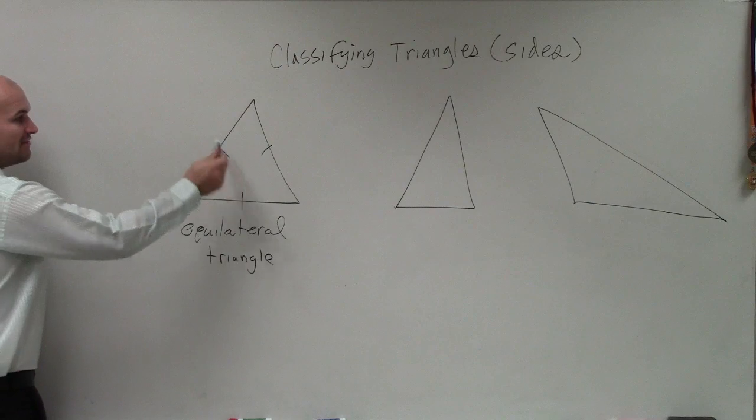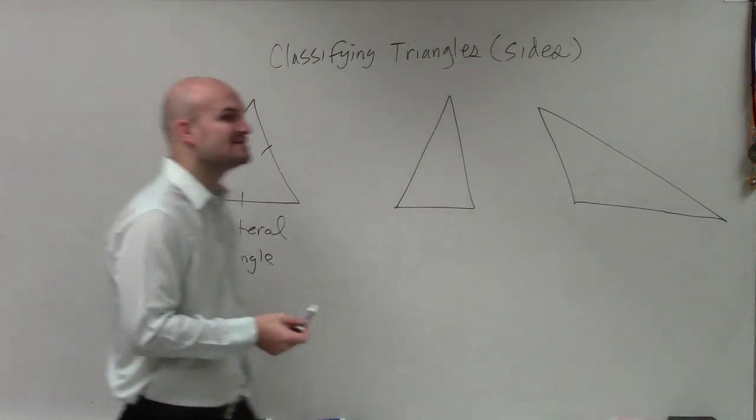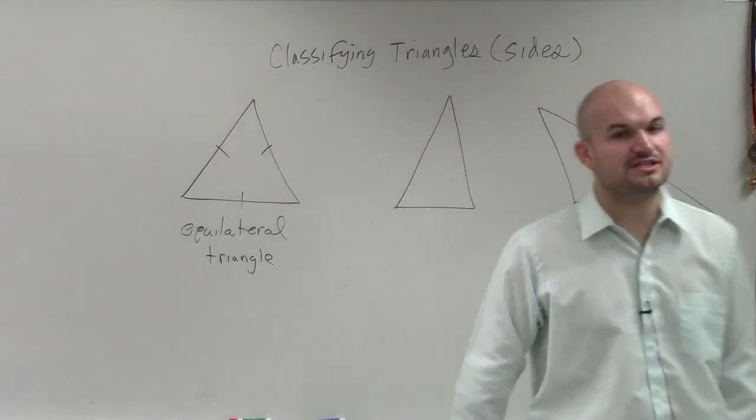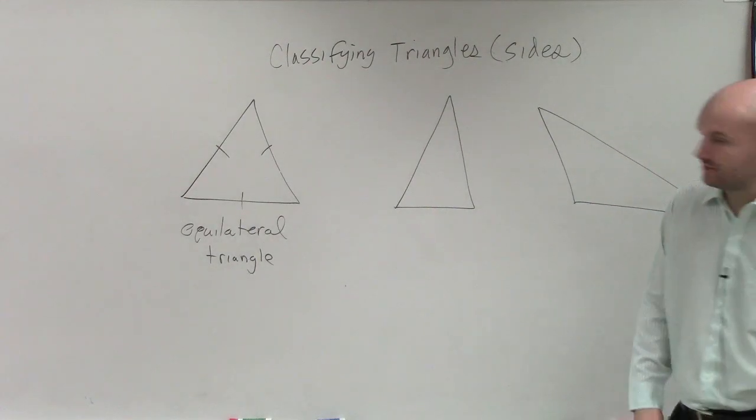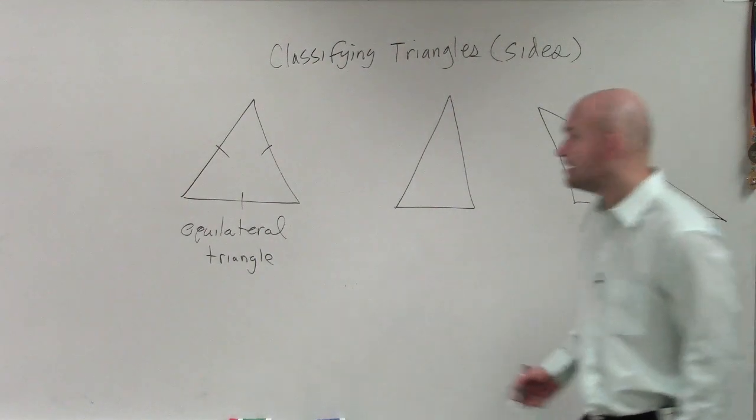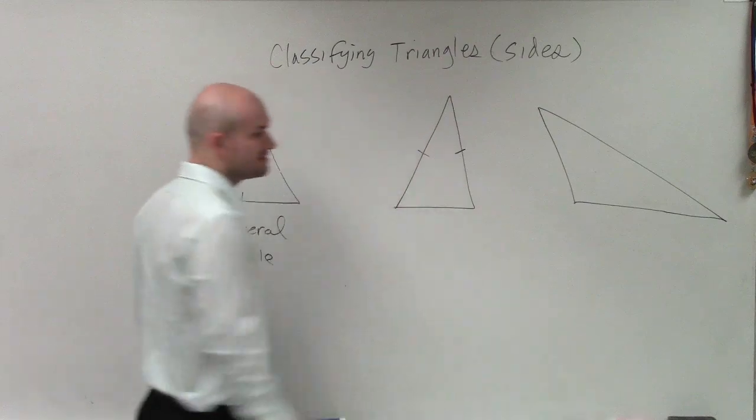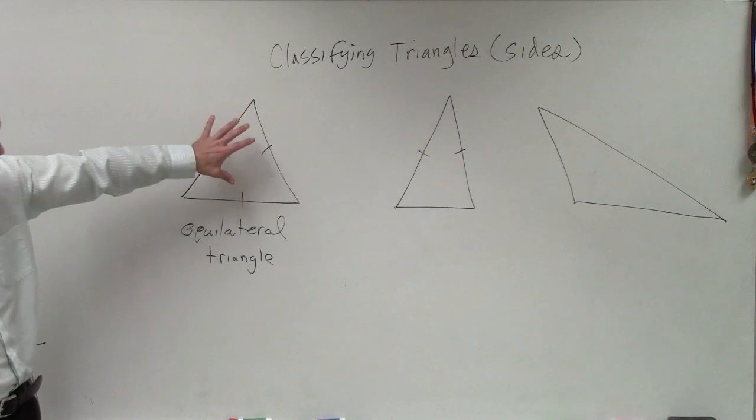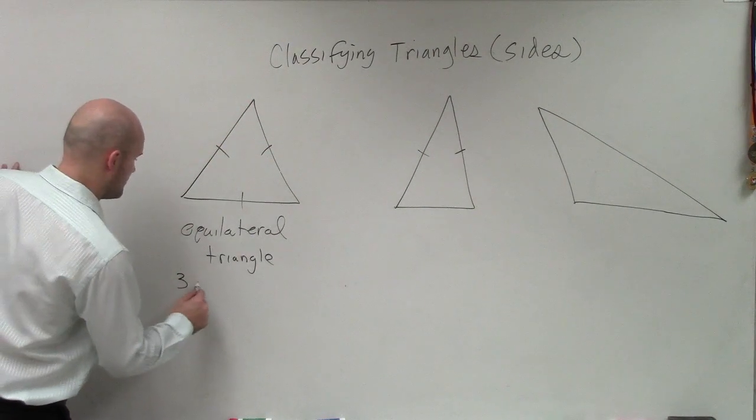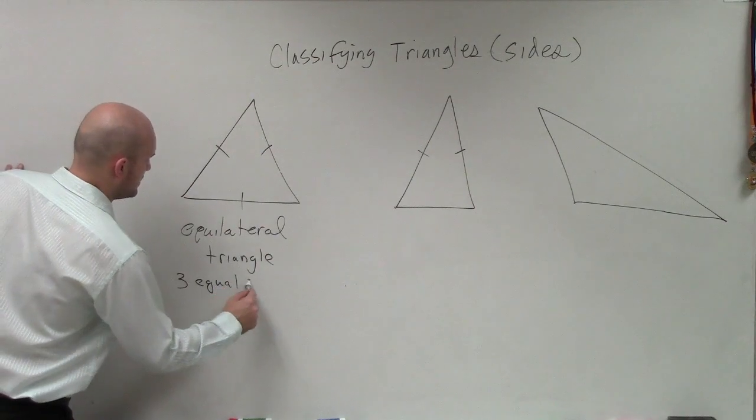That means the measure of each side length - notice how I represent the measure of each side length with a tick mark - is what we call equilateral. Here's three equal sides. I should probably write that in: three equal sides.